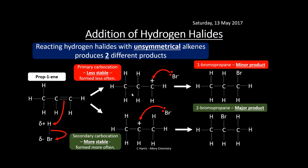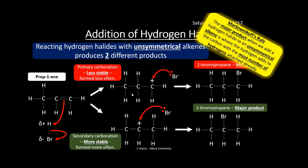This is described by Markovnikov's rule: when adding a hydrogen halide to an asymmetrical alkene, the major product is the one where hydrogen adds to the carbon already bearing the most hydrogens. This always produces the more stable carbocation intermediate — in this case, the secondary carbocation giving 2-bromopropane as the major product.